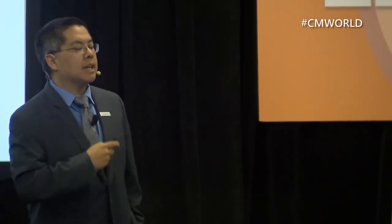So how do we go from creating boring content to creating stuff that people actually want? The general solution — unsurprisingly, since you're in this room — is artificial intelligence, which offers three promises: acceleration, accuracy, and automation.